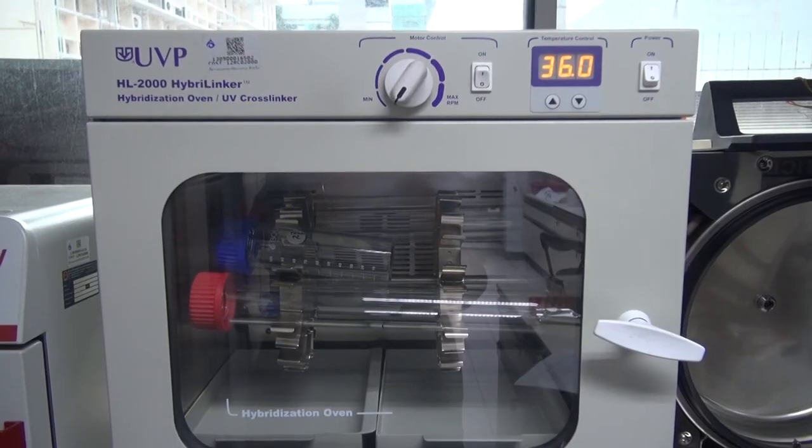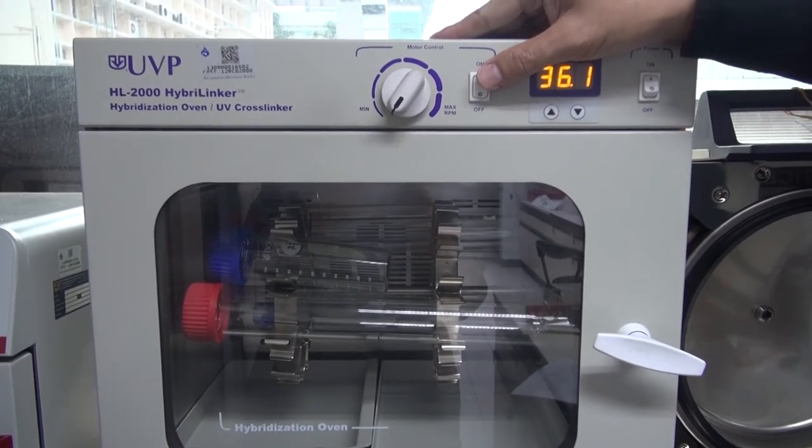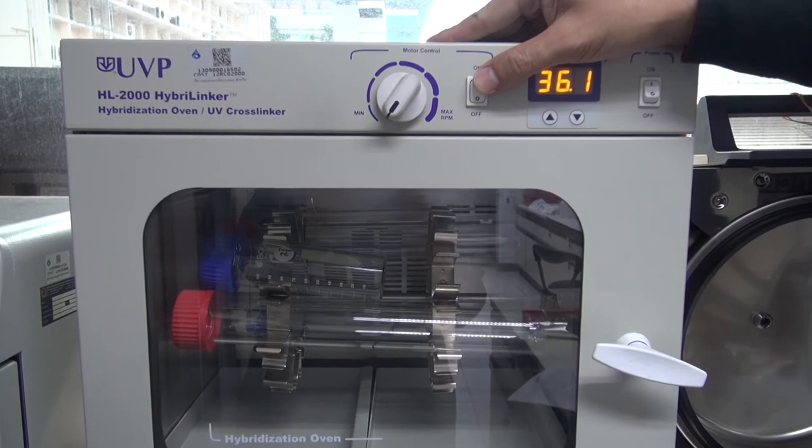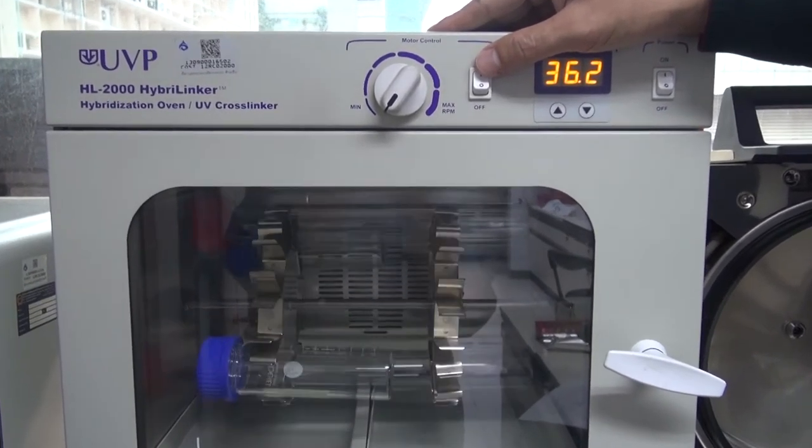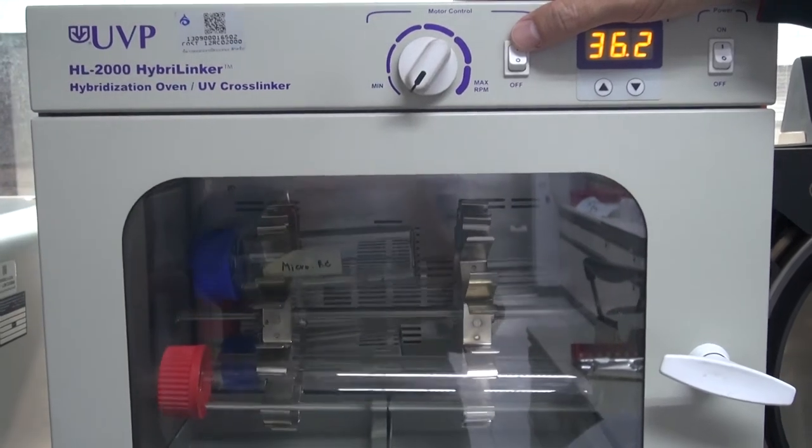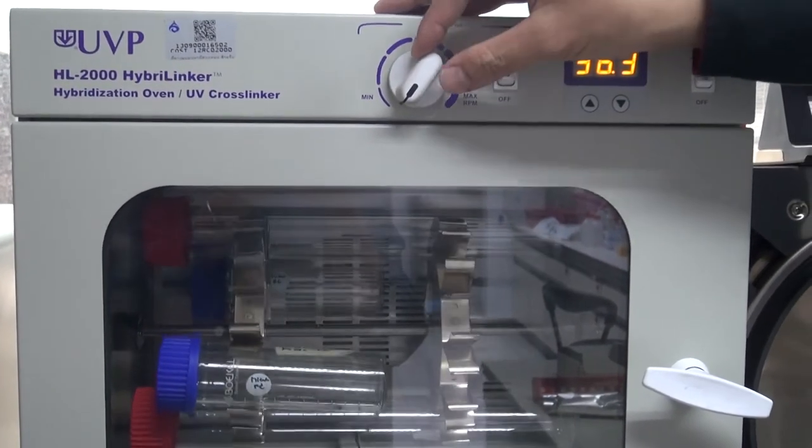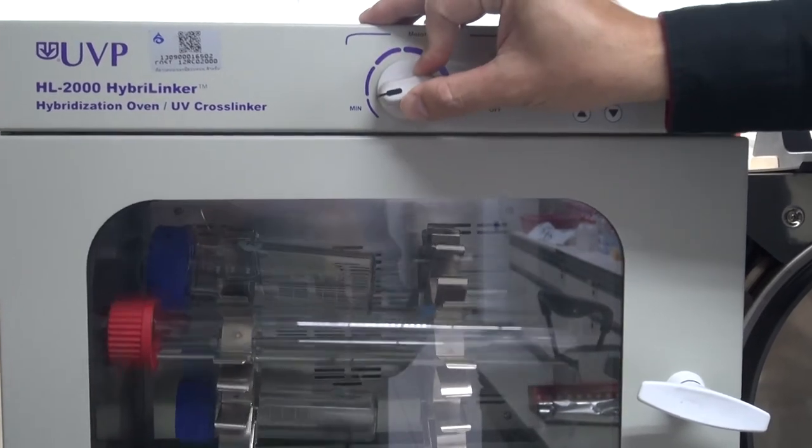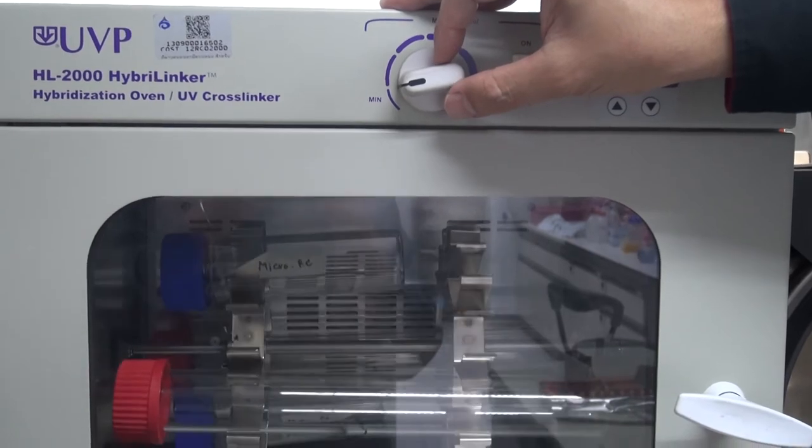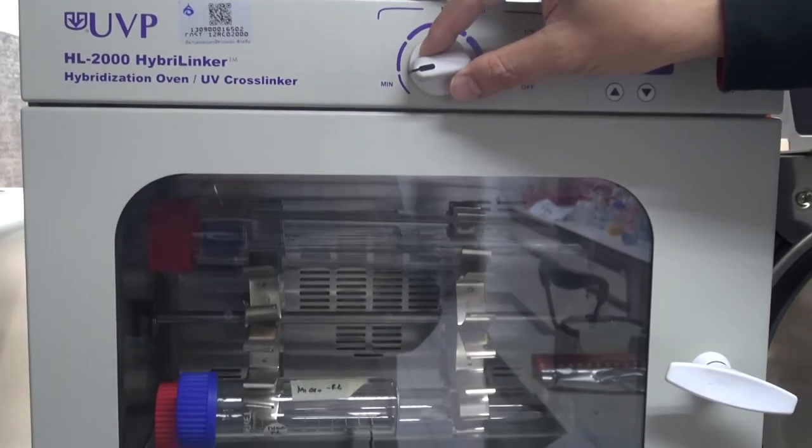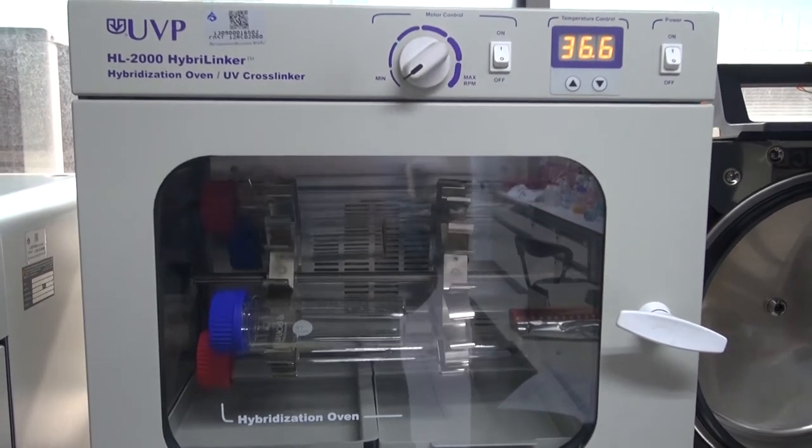To turn on the motor for the bottle carousel, press the motor control power switch to the on position. To adjust the bottle carousel to desired speed, simply turn on the control knob clockwise. To lower the rotating speed, turn the knob anticlockwise to suit different hybridization conditions.